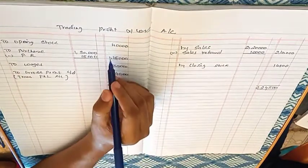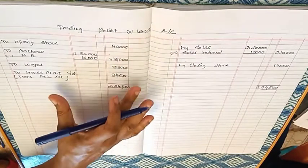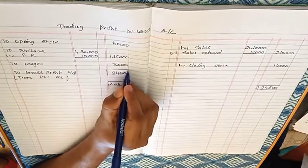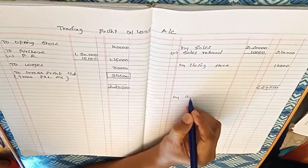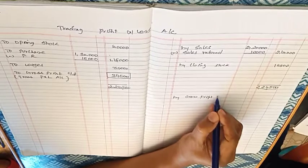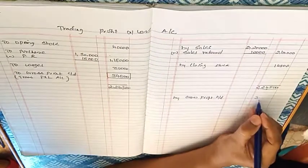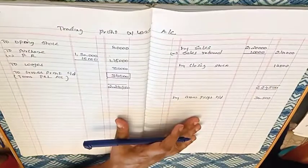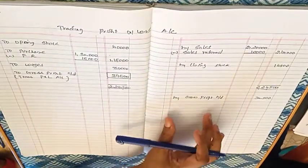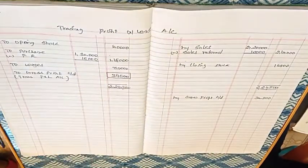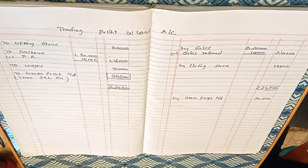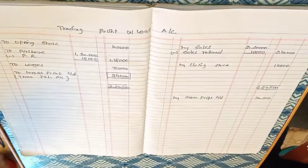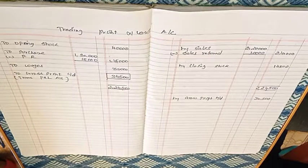This completes the trading round. Gross Profit is calculated. In the Profit and Loss Account, income is credited and expenses are debited. The profit is then transferred. Note: Land is an asset.